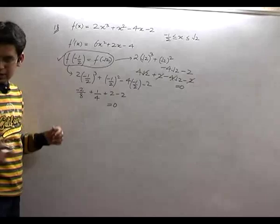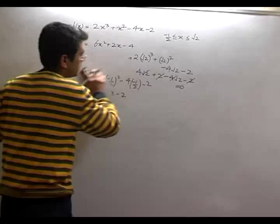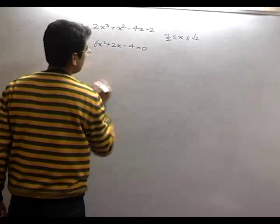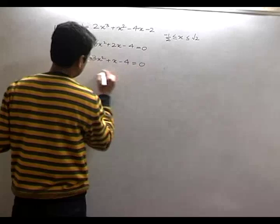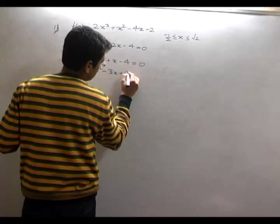So I have to find a point c where f'(x) is 0. So I had found f'(x). So I just need to find out the roots of this equation. This is 3x² + x - 4 = 0.